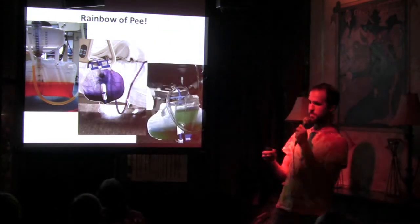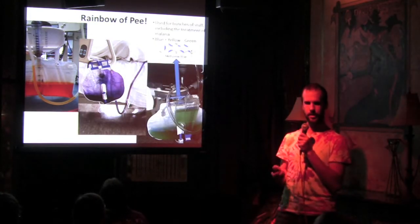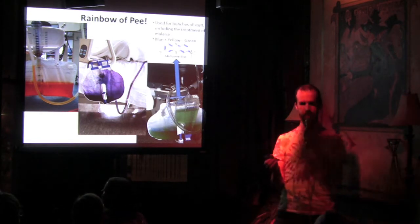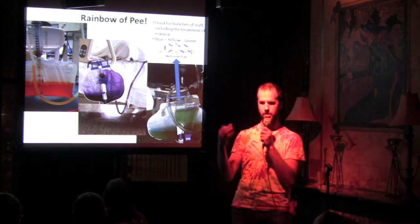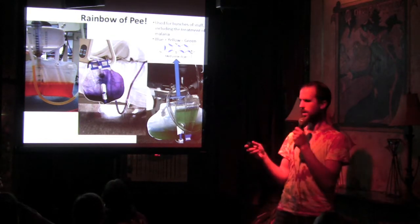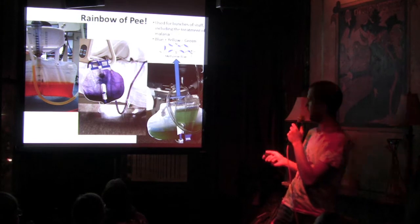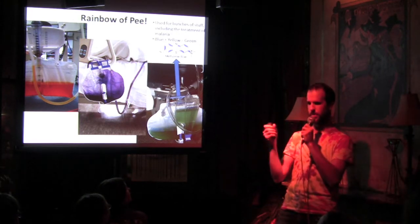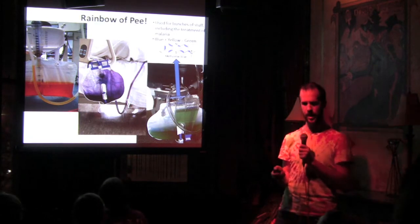So your pee can also be green if you take drugs such as methylene blue. And you take these types of things for treatment of malaria and all sorts of other things. You may say blue, well, this pee is green, I'm no dummy, but don't forget the color wheel, blue plus yellow equals green.